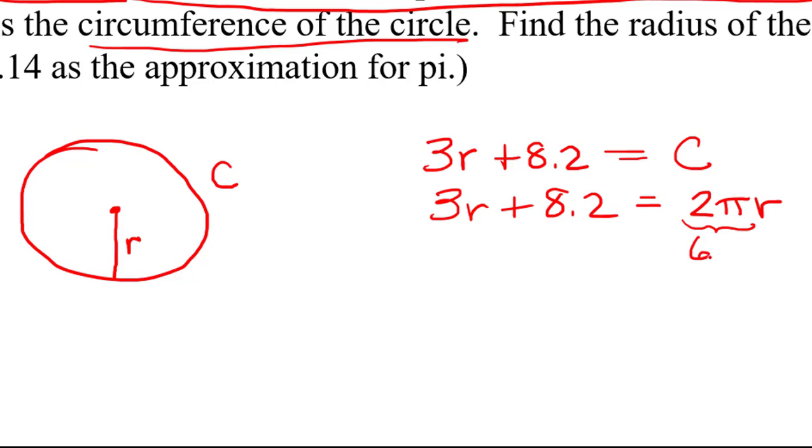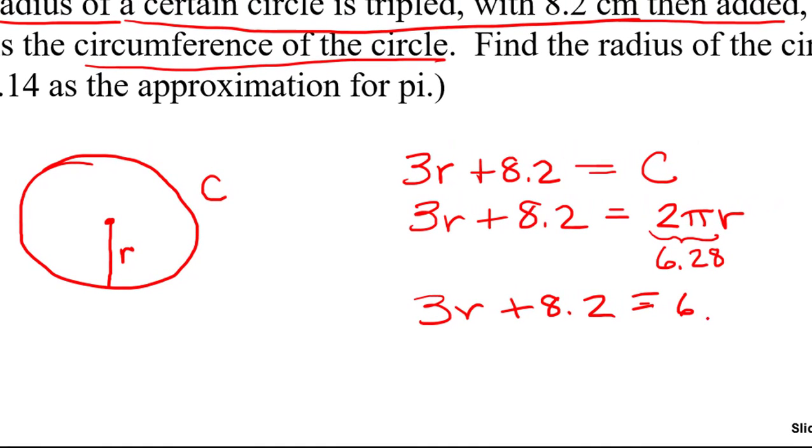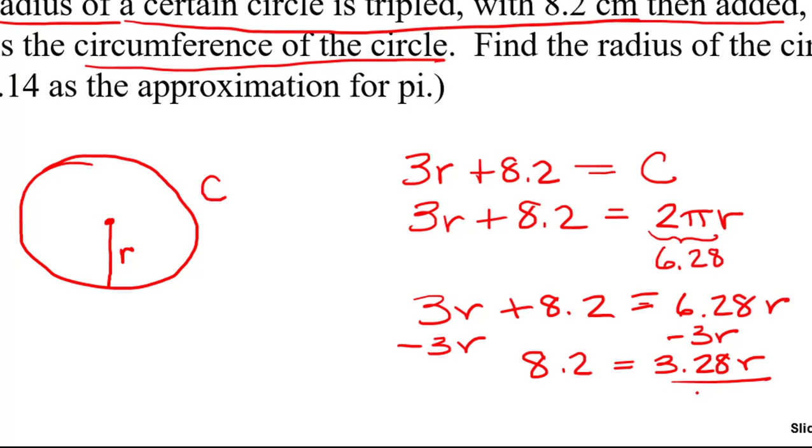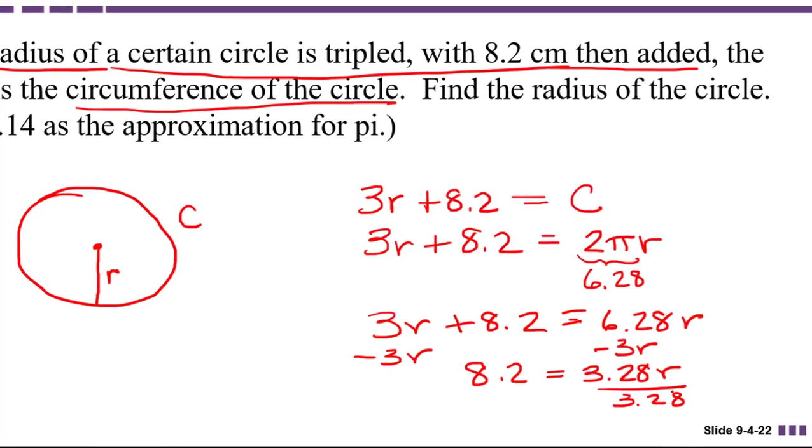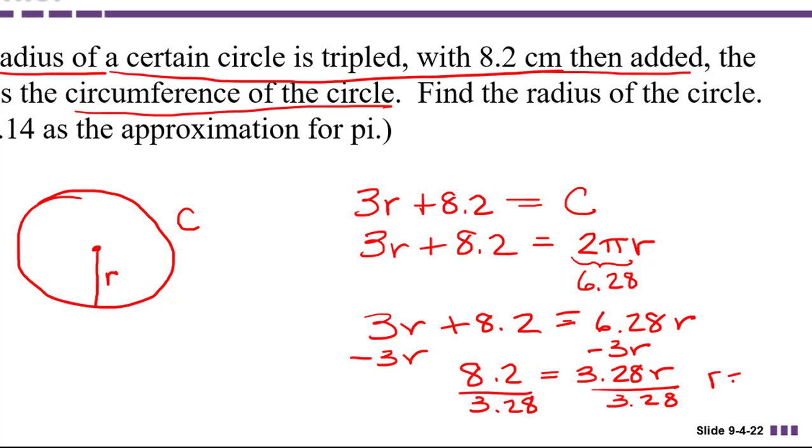So 2 times 3.14 is going to be 6.28. So we have 3r plus 8.2 equals 6.28r. We're going to subtract 3r from both sides. That gives us 8.2 equals 3.28r. And now to get r by itself, we divide both sides by 3.28. And the result is that the radius is equal to 2.5.